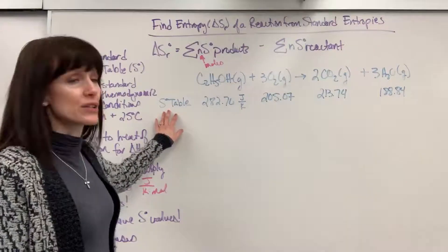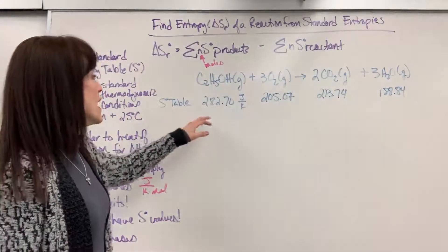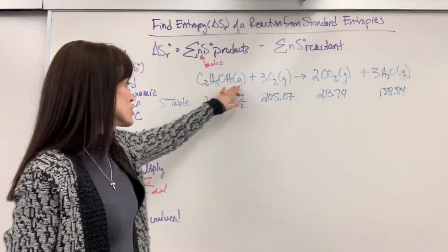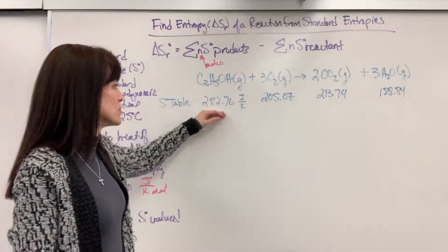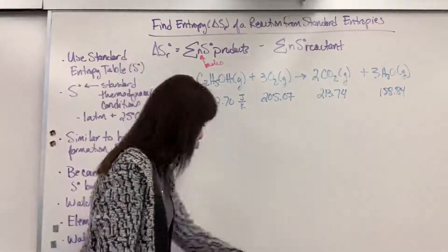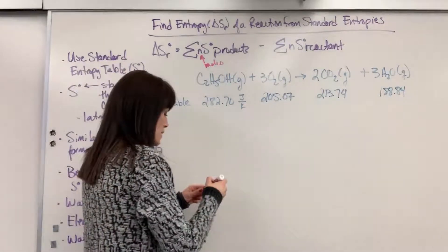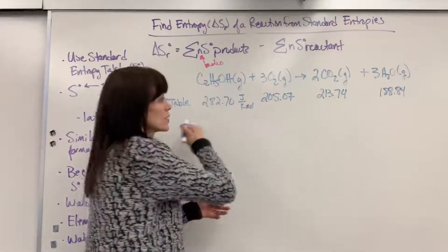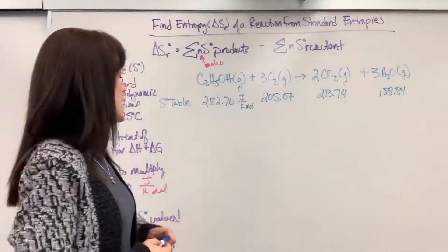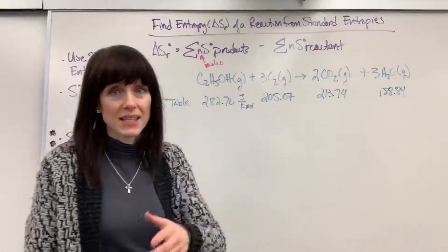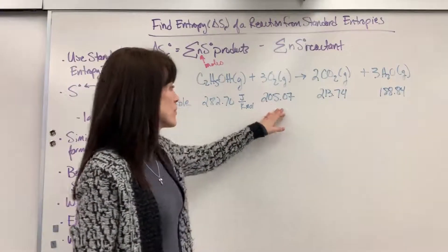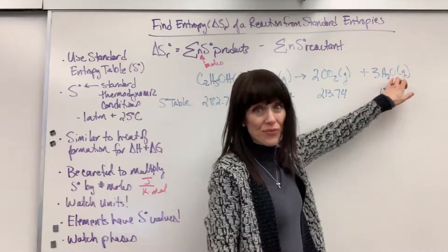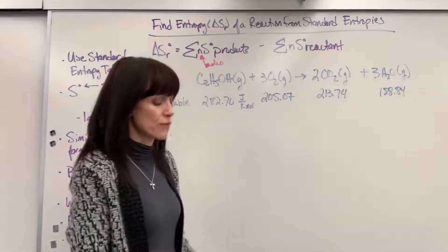Look up the standard entropy. Okay, so I looked at my table and I was really careful. Ethanol, it had a value for both gas and liquid. So I was sure to find the gas. It's 282.7 joules divided by Kelvin times mole. Sorry, I left off one unit there. Times mole. Okay, so, and that's the unit for all of these from the table. Oxygen gas, again, I was really careful to find the gas. 205.07, gas of carbon dioxide, 213.74. And then the gas form, had to be really careful, was 188.84.